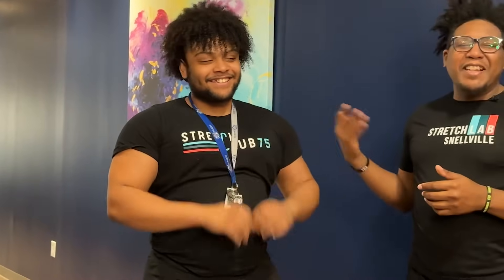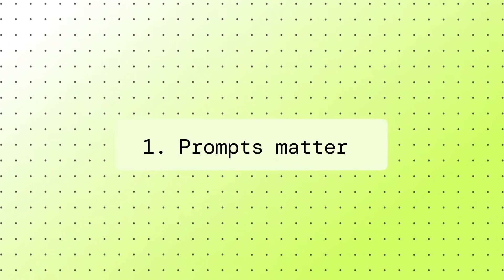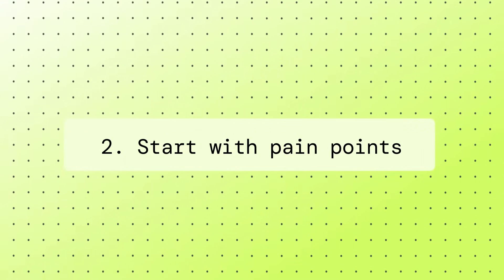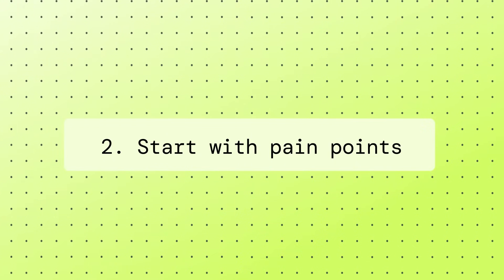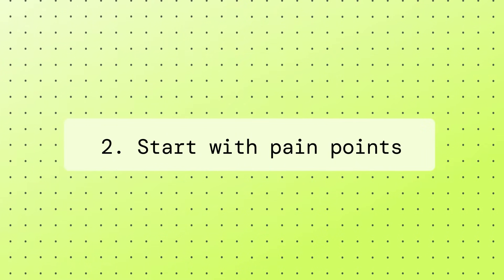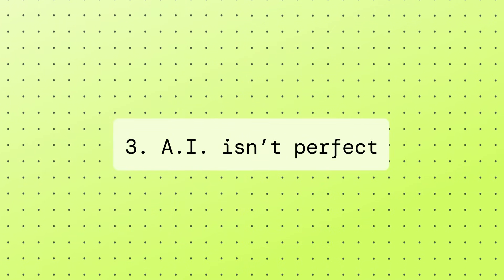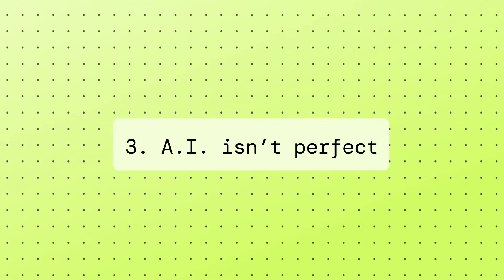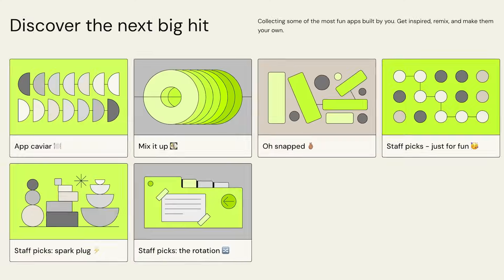These are tools that all entrepreneurs need. Three main points I want to leave you with. One, the quality of the output depends on the prompt that you enter as the input. Secondly, remember to tie your pain points and challenges to what it is that you're trying to build with these tools — the whole point is that it's making your life easier. Lastly, AI is not perfect, so be sure you're aware of the intended use cases that you can create. PartyRock is free. All you have to do is visit PartyRock.aws, sign up with an account, and get started.